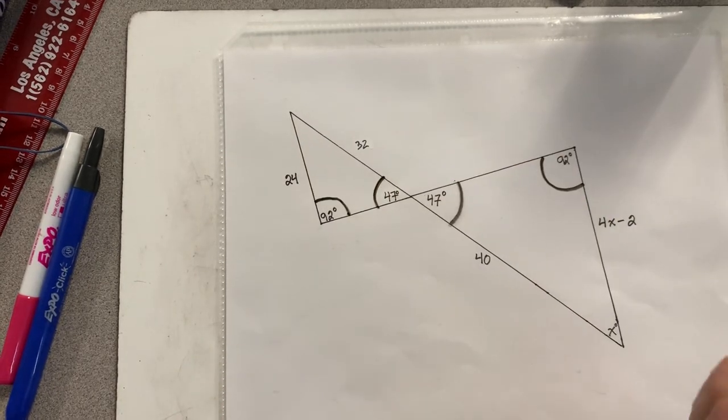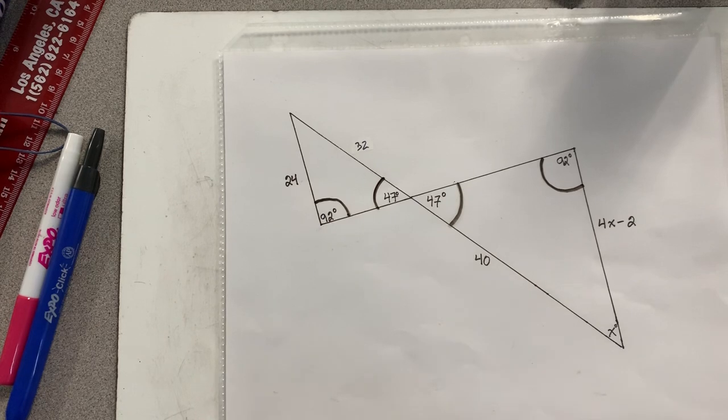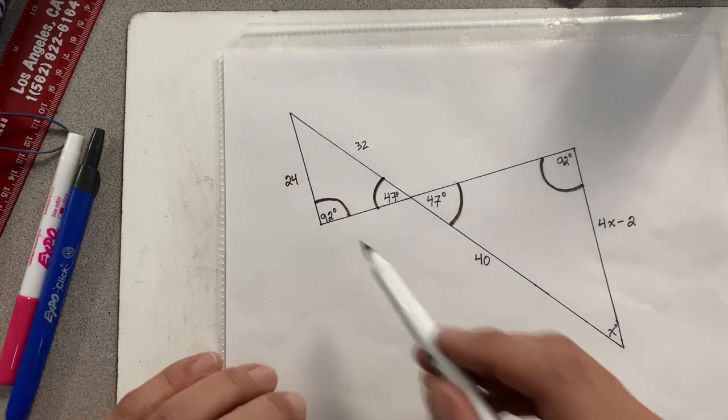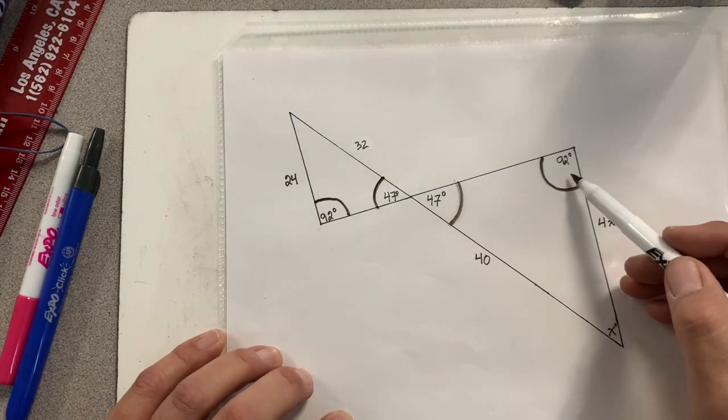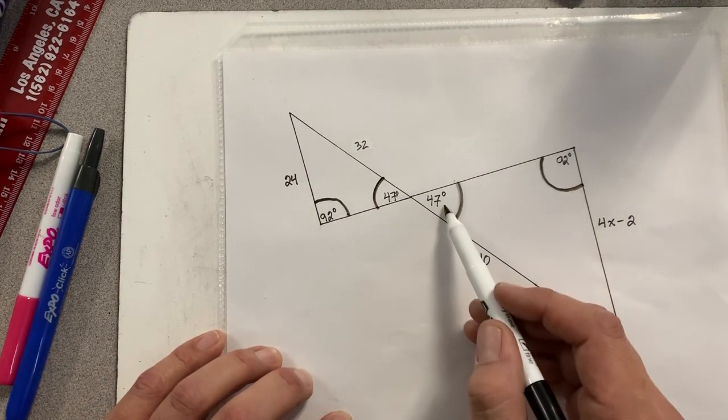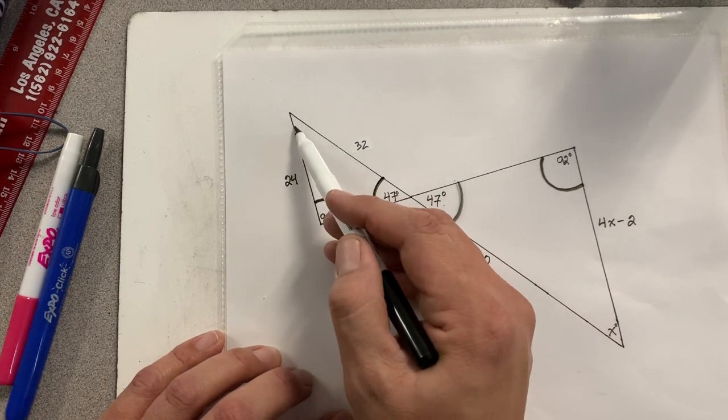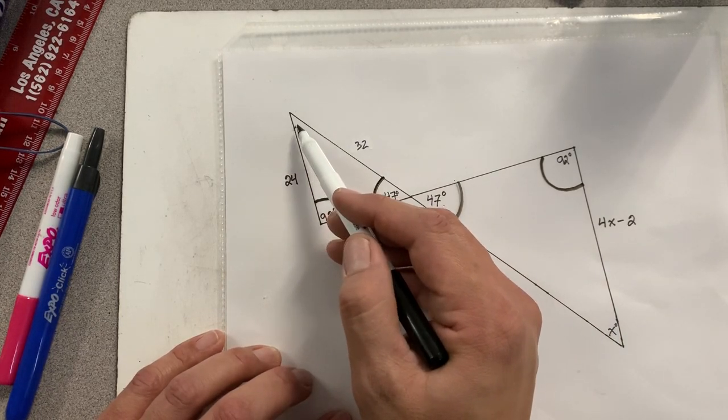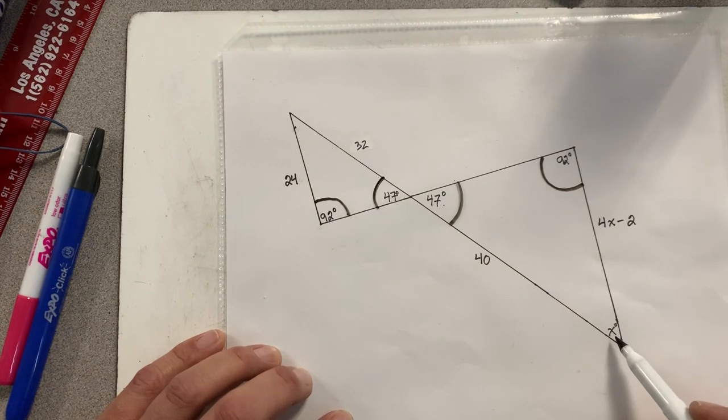That's two angles. But for both triangles to be similar, the three corresponding angles must be the same. Well, if this is 92 and this is 92, and this is 47 and this is 47, then this third angle has to be exactly the same as this third angle here.